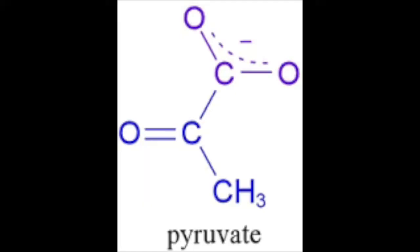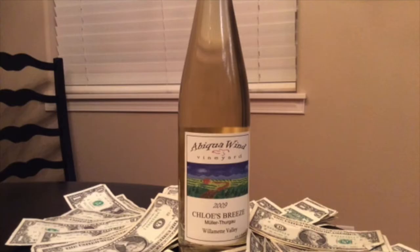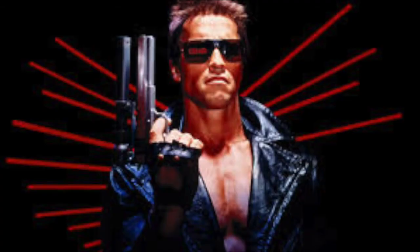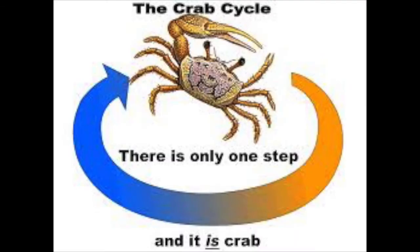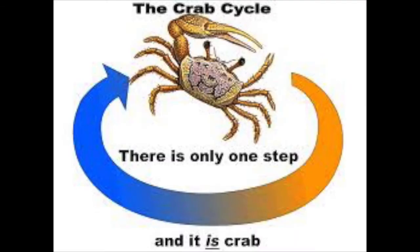There's tons of energy left in pyruvate — the two three-carbon molecules we're left with at the end. What happens to pyruvate depends on the metabolic pathway where it gets sent. If it's anaerobic, it'll be fermented. But in aerobic cells, pyruvate's destination will be the Krebs cycle and total oxidation.